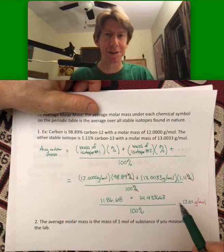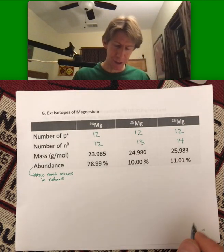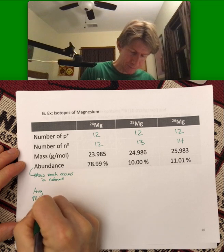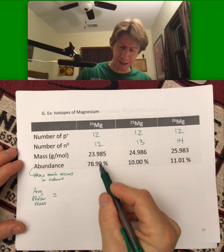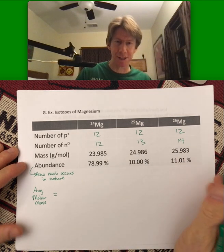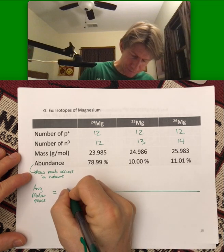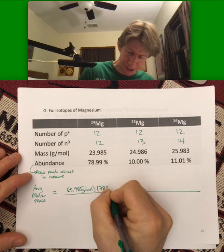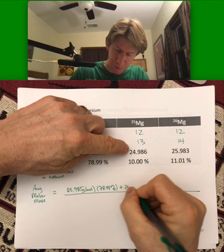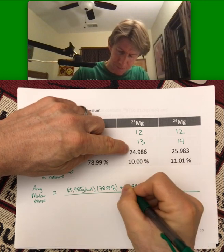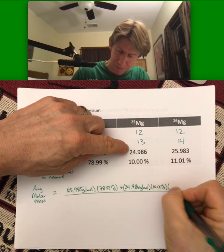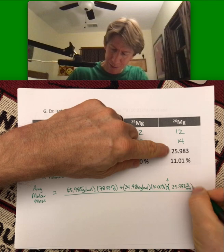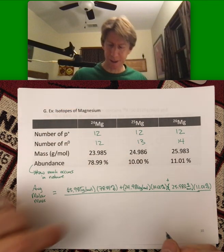At least one of the problems on the homework asks you to write it out just like this, showing all of your calculation. Average molar mass is going to equal mass times percent plus mass times percent plus mass times percent. 23.985 grams per mole times 78.99 percent plus 24.986 grams per mole times 10.00 percent plus 25.983 grams per mole times 11.01 percent over 100 percent.